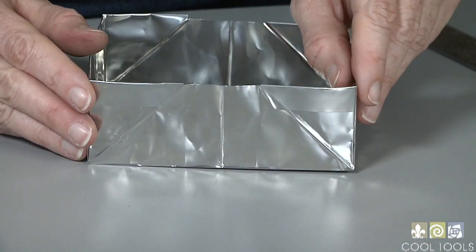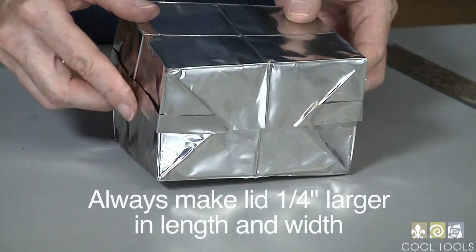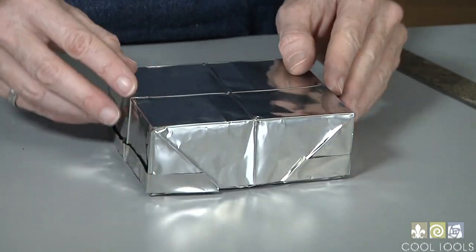To make the lid, start with a piece that's seven and a quarter by nine and a quarter and make it the exact same way. And you'll end up with a beautifully fitted lid.